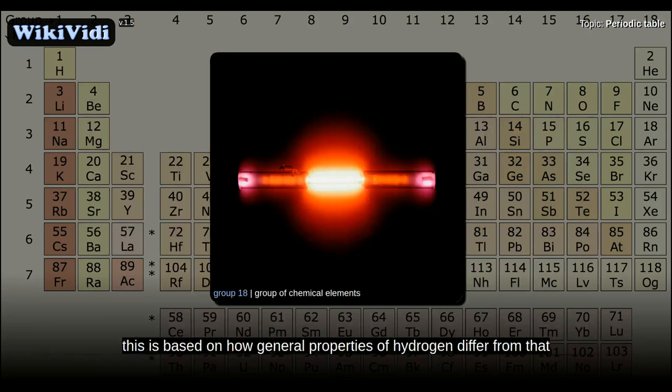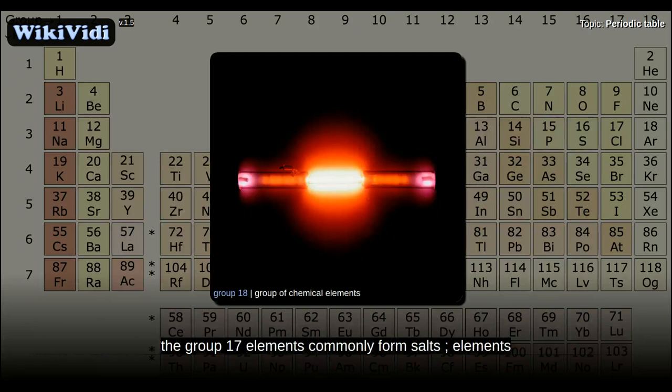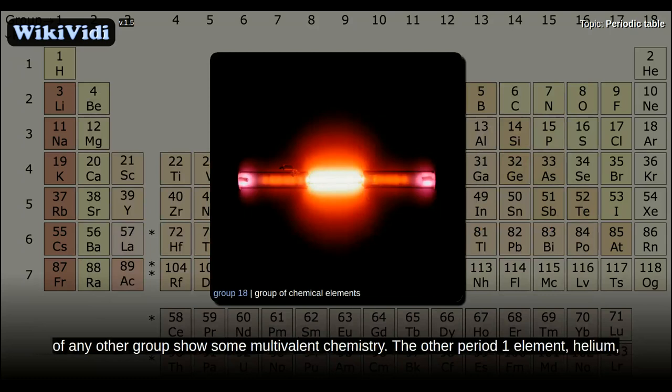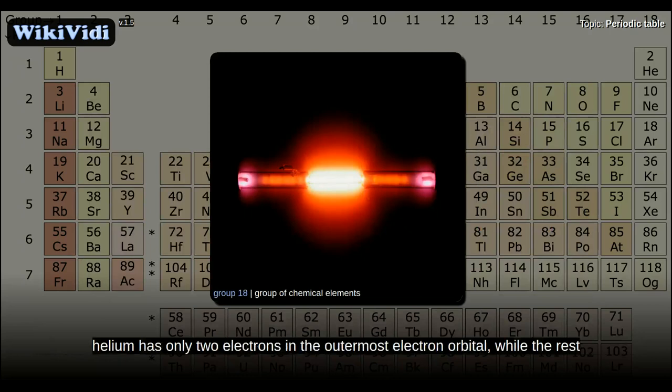Finally, hydrogen is sometimes placed separately from any group, based on how its general properties differ from those of any group. Unlike hydrogen, the other Group 1 elements show extremely metallic behavior. The Group 17 elements commonly form salts, and elements of any other group show some multivalent chemistry. The other period 1 element, helium, is sometimes placed separately from any group as well. The property that distinguishes helium from the rest of the noble gases is that in its closed electron shell, helium has only two electrons in the outermost electron orbital, while the rest of the noble gases have ns²np⁶.